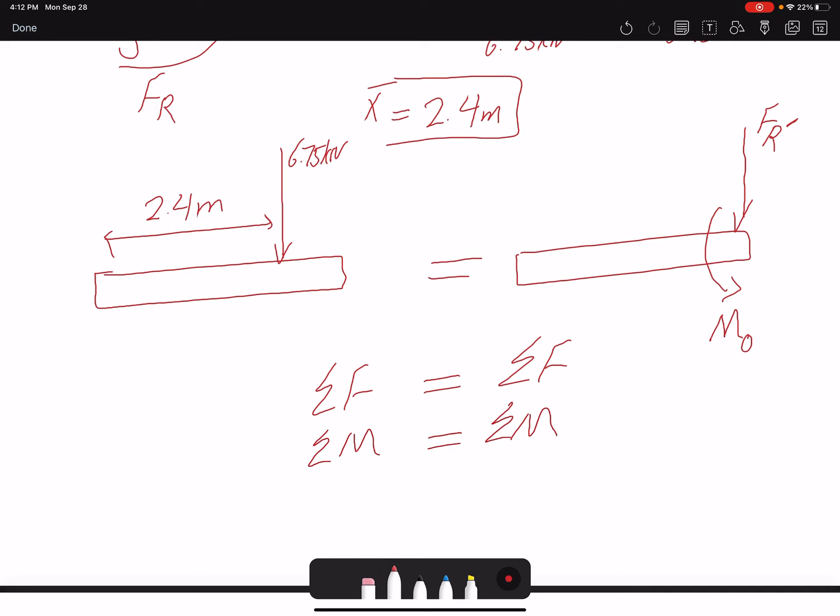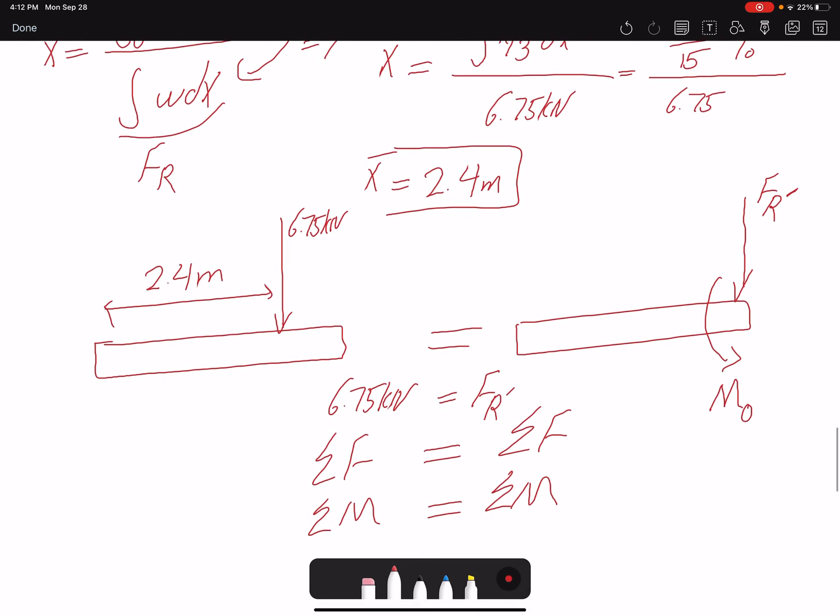The summation of forces here would be 6.75, and here FR prime. So FR prime is 6.75—it really doesn't matter for the force. But moving the force this distance is going to create a moment for us.